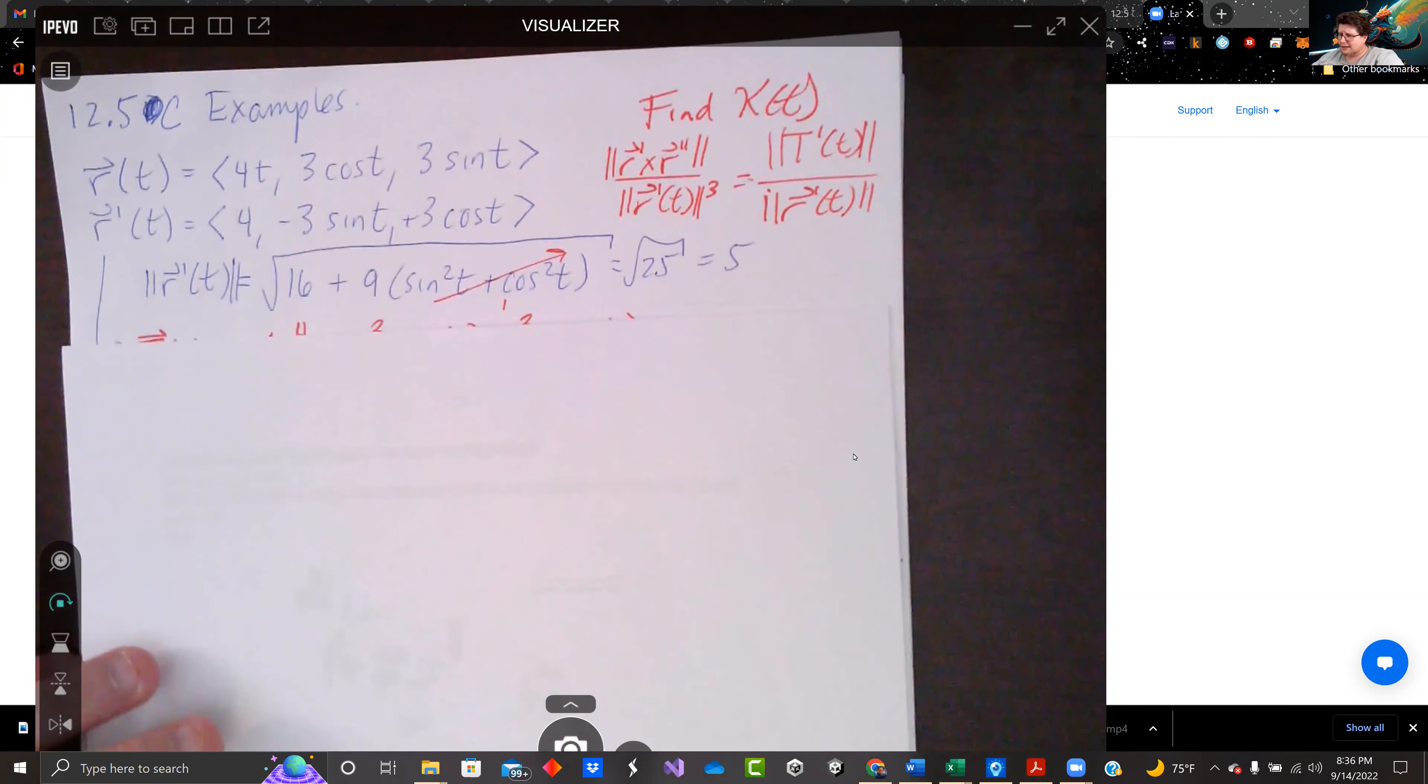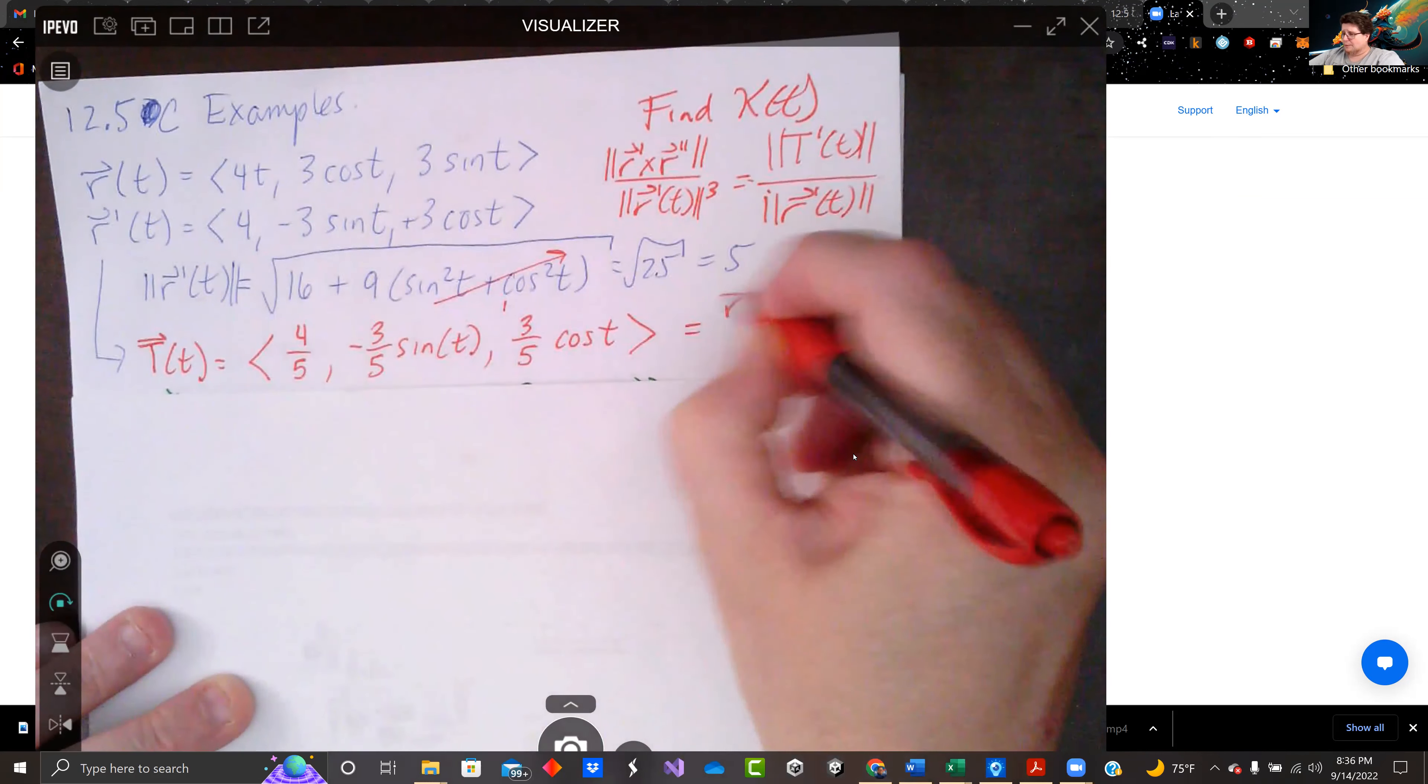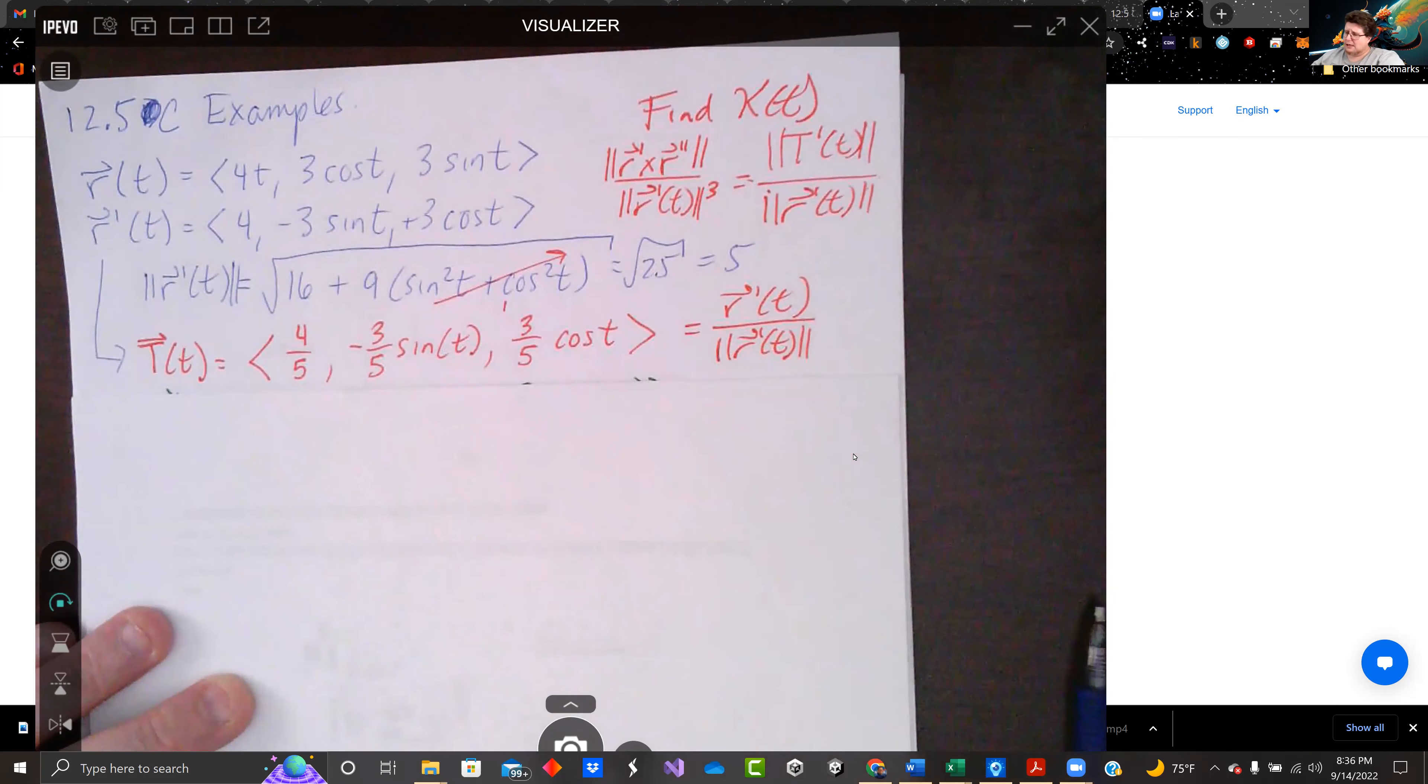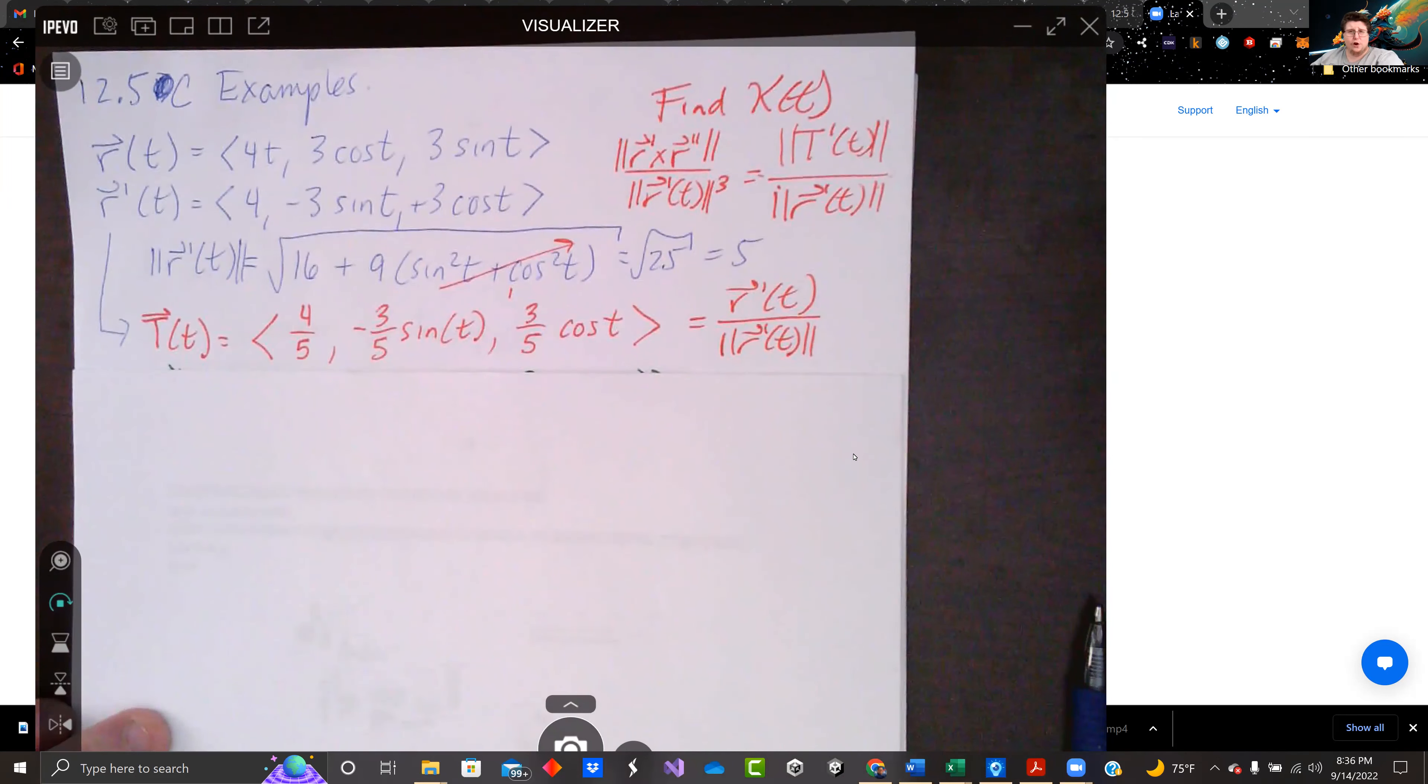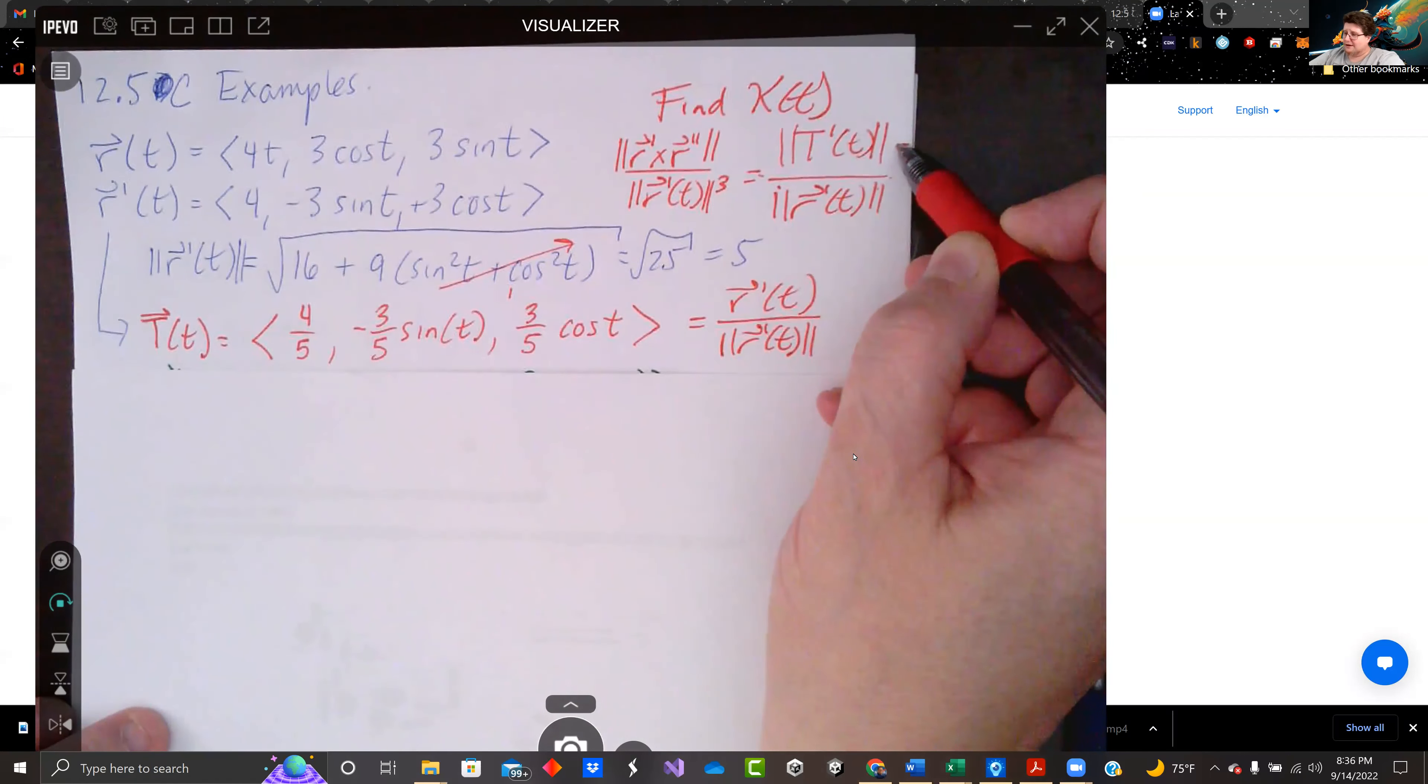I'm going to go with this right side one. So I divide r prime of t by 5, and I get our tangent vector, r prime of t divided by magnitude of r prime of t. So we've got 4 fifths, negative 3 fifths sine t, and 3 fifths cosine t. We need the derivative and the magnitude of the derivative.